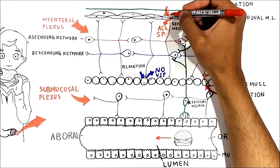To sum it up: behind the bolus we get contraction of the circular muscles and relaxation of the longitudinal muscles, whereas in front of the bolus we get relaxation of the circular muscle and contraction of the longitudinal muscles. All these processes allow the bolus to move forward toward the anus. This is how the enteric nervous system functions autonomously using the local reflex.